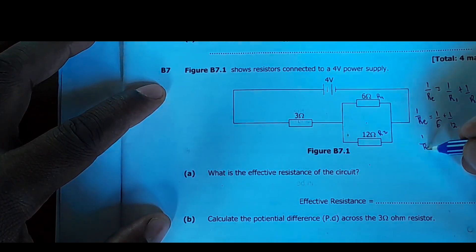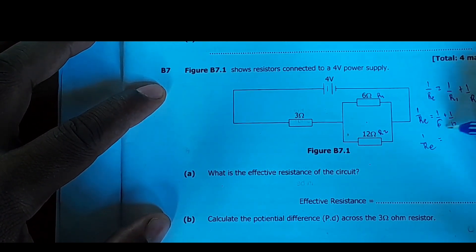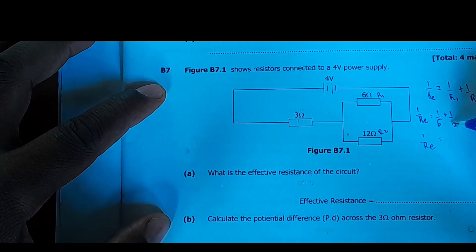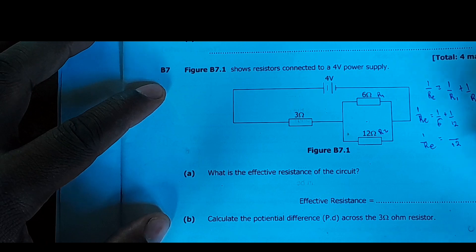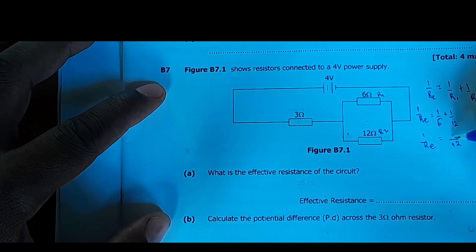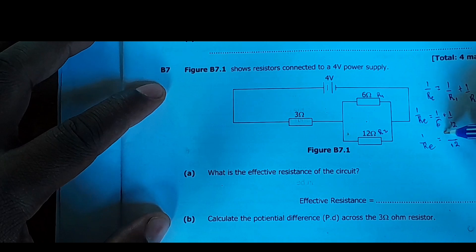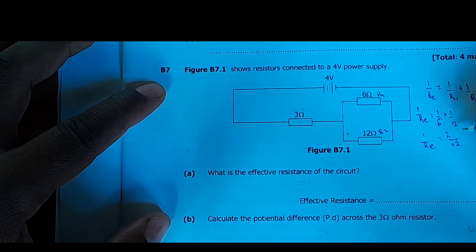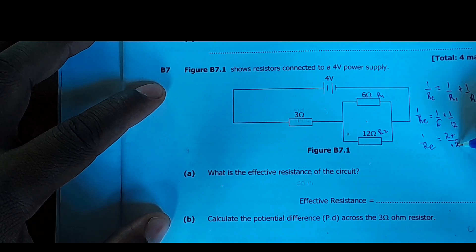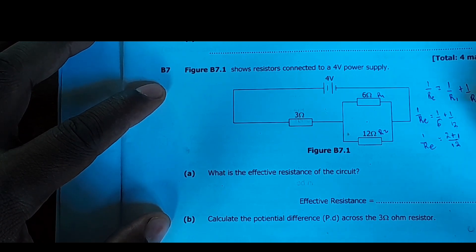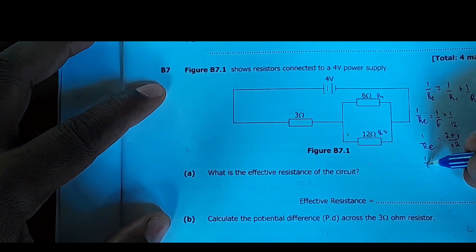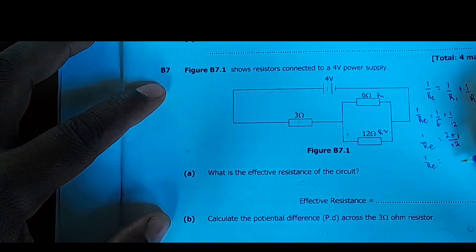We find the lowest common multiple of the two denominators, 6 and 12. The LCM is 12. So: 6 into 12 is 2, giving 2 times 1 which is 2; plus 12 into 12 is 1, giving 1 times 1 which is 1. Bringing it down, we have 1/Re equal to 2 plus 1, that is 3 over 12.